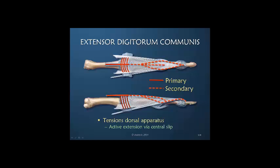Once the communis power moves across the sagittal band fibers, this becomes in my opinion a secondary influence. There's a direct influence to the central slip insertion and via the conjoined lateral bands there's also influence to the terminal tendon insertion. But as we know these fibers are not moving separately, and therefore the primary role of the extensor digitorum in the dorsal apparatus is to provide tension throughout the dorsal apparatus, making it easier for the small intrinsic muscles to contract and affect excursion.